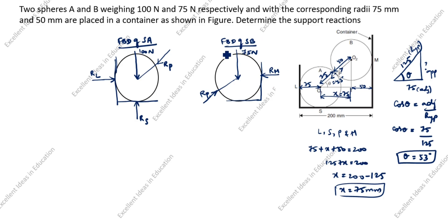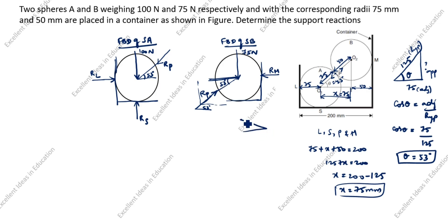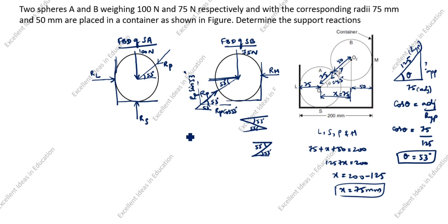Now we will calculate for sphere B by resolving forces. The inclined force RP needs to be resolved, so we draw a dotted line. This angle is 53 degrees, so this angle is also 53 degrees — as we studied earlier, alternate angles are equal. So this angle is also 53 degrees. Now RP resolves into components.